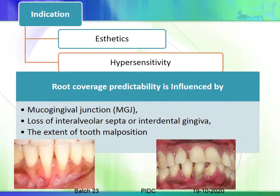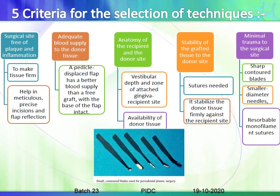The main indications for root coverage are aesthetics and hypersensitivity. Root coverage predictability is influenced by the bucco-gingival junction, loss of the intra-alveolar septum, interdental papilla, and the extent of tooth malposition. There are five criteria for selection of techniques, and only if these criteria are fulfilled should you proceed with surgery.